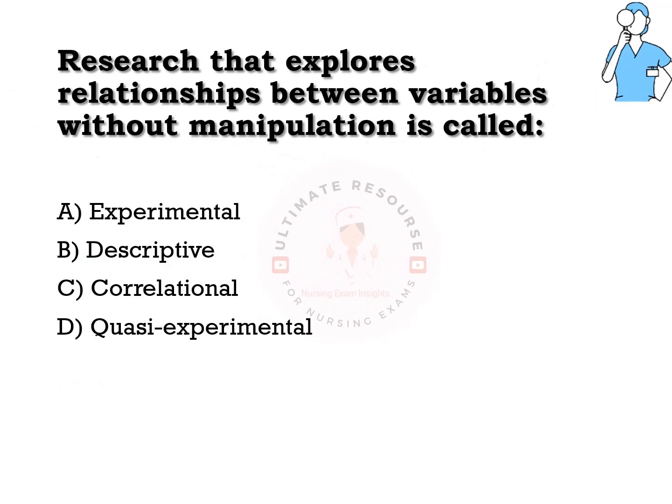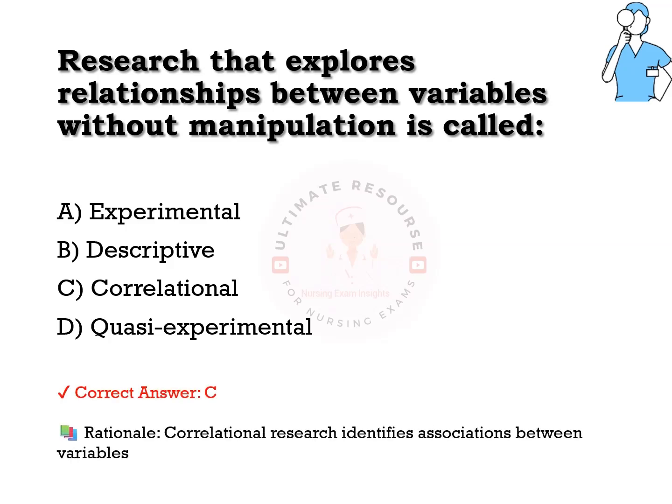Research that explores relationships between variables without manipulation is called: options are a) experimental, b) descriptive, c) correlational, d) quasi-experimental. The answer is c) correlational. Correlational research identifies associations between variables.